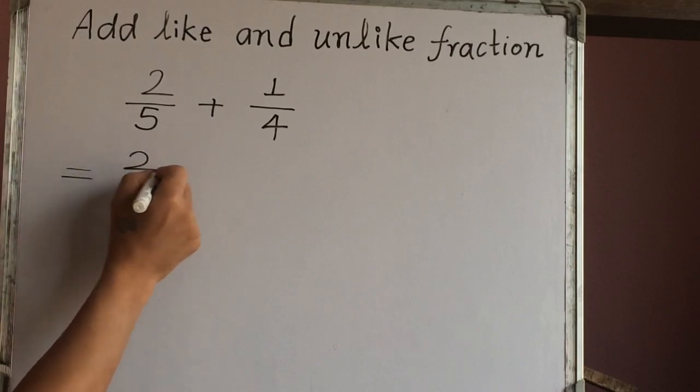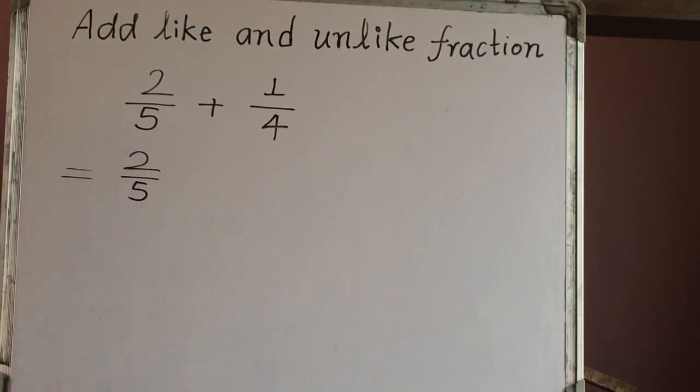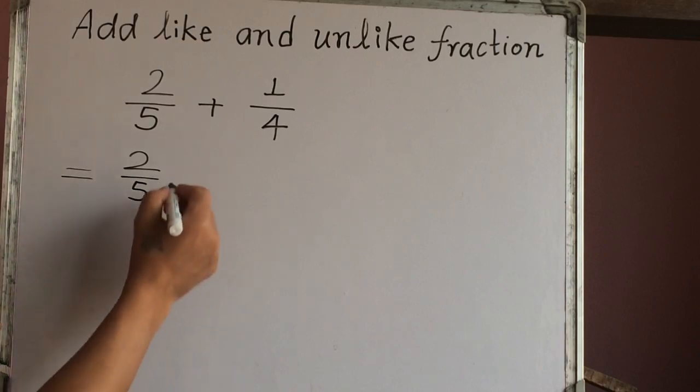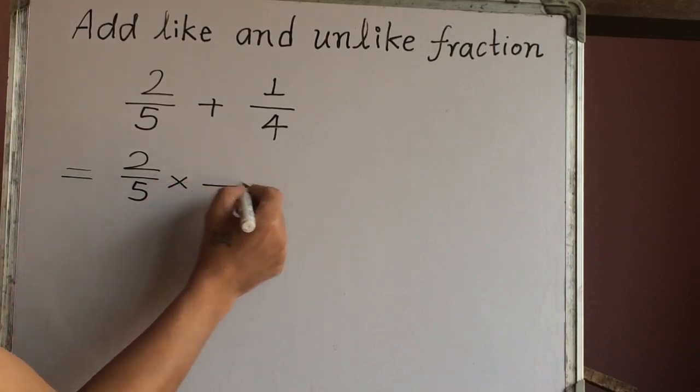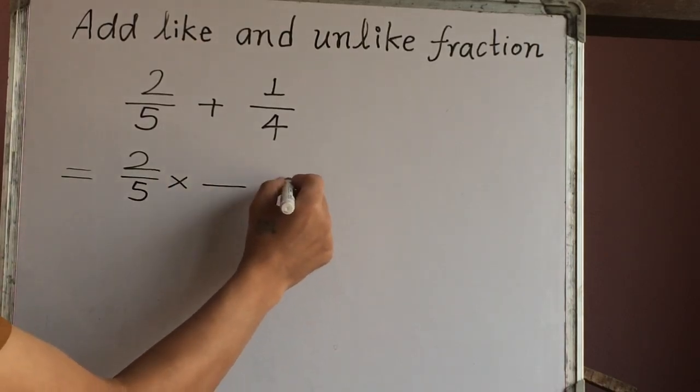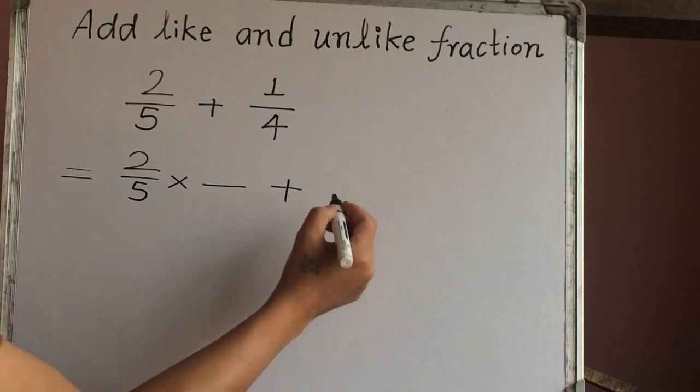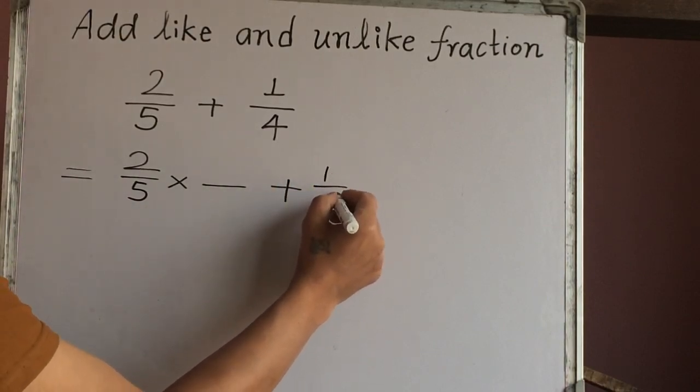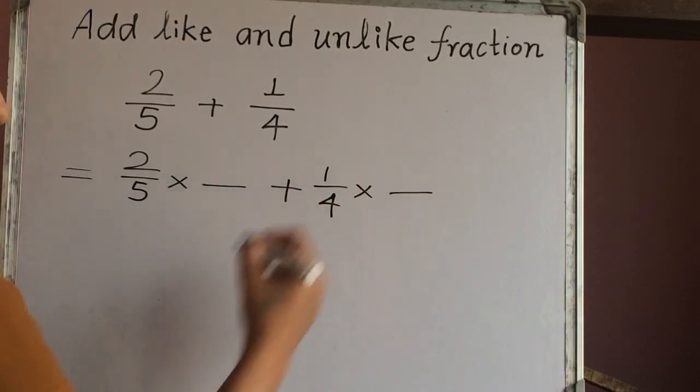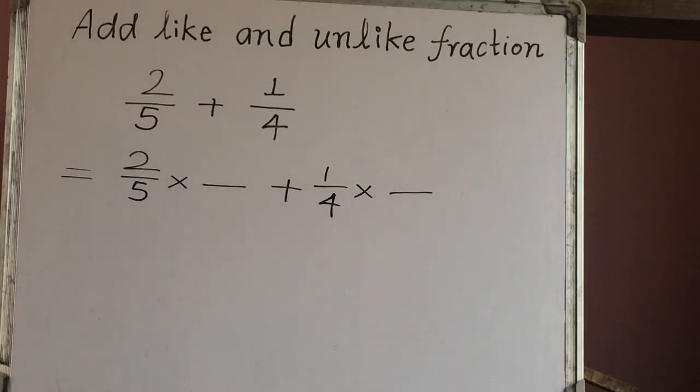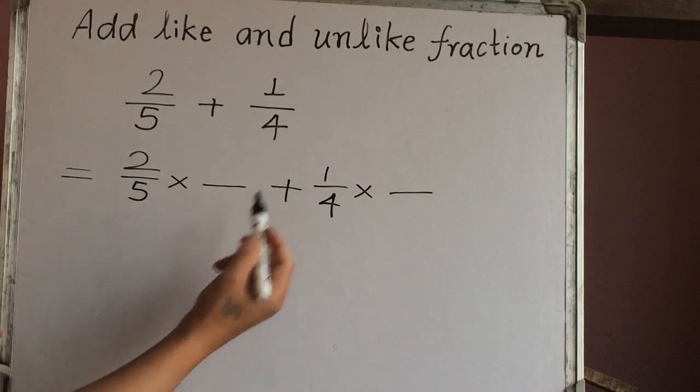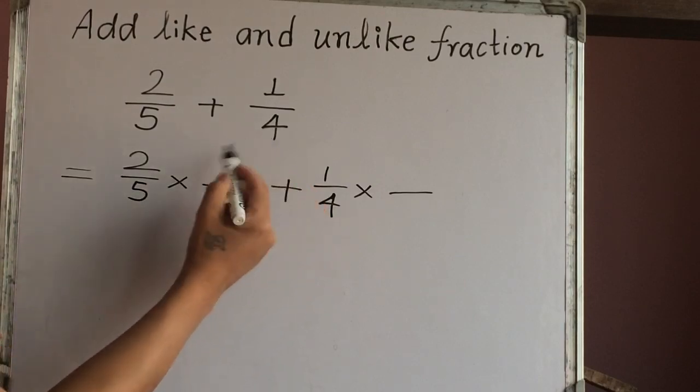We write the first fraction is 2 out of 5, and we write here multiplication sign in one fraction line. Plus second fraction is 1 out of 4 times fraction. So how can we multiply this one here? So the first fraction should be multiplied by the second denominator, which is 4.